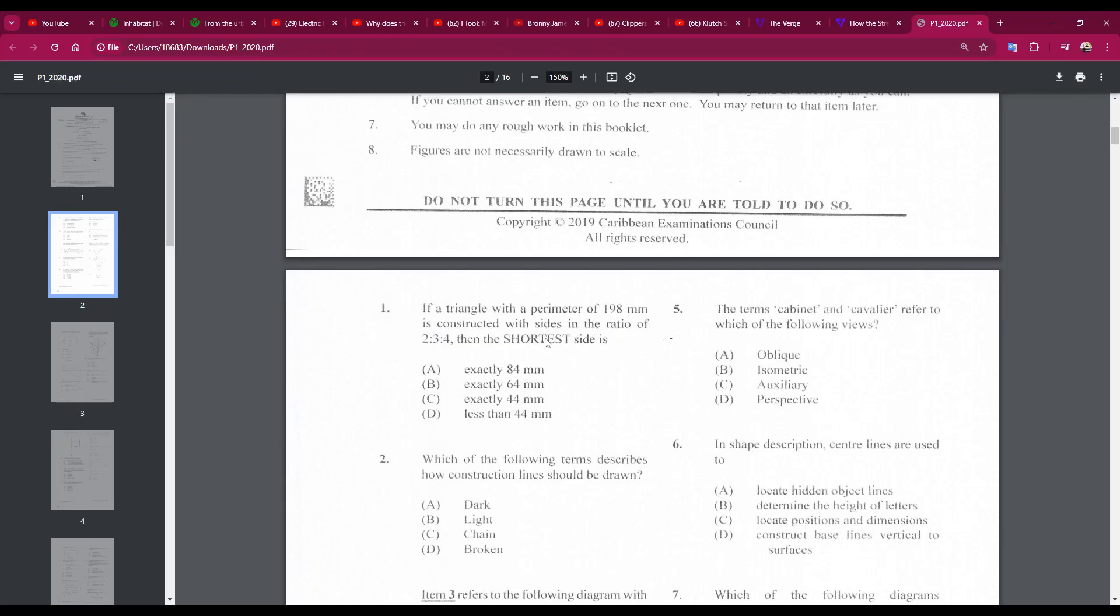So what we must do is add these ratios: two plus three plus four will give us nine. 198 divided by nine is 22, so each unit or each part is 22. And the shortest part consists of two units, so it will be 22 by two, which is C, exactly 44.